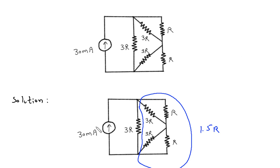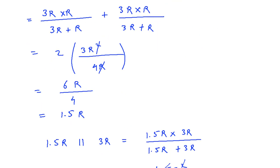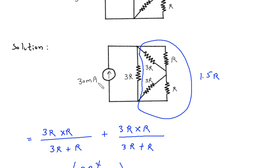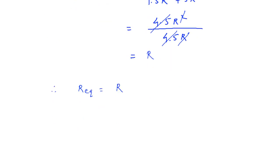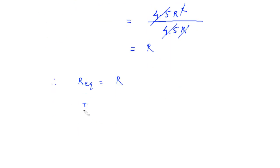Now, we have the value of resistance as R and the value of current is 30 mA. I is equal to 30 mA or 30 into 10 raise to minus 3 ampere.